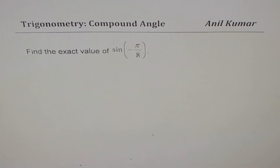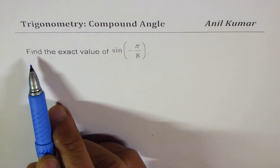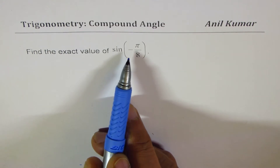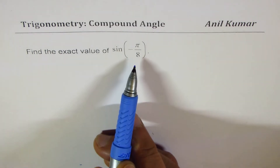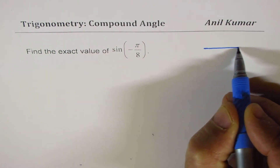I'm Anil Kumar. In this video we will learn how to find the exact value of trigonometric ratios using compound angles. The example here is to find the exact value of sine of negative π/8, so let's begin.